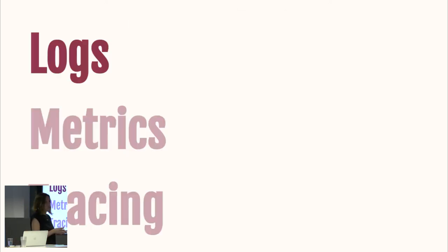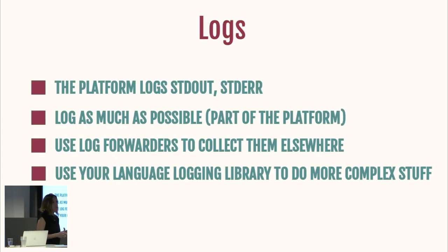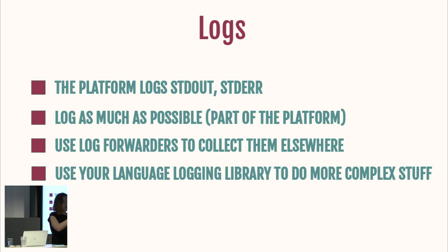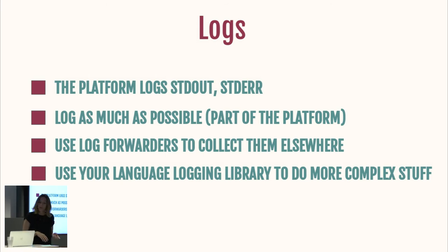Where do we start? If you want to start adding observability to your system, start with logs. Why? Because it's super simple for any cloud to add logging to serverless — it's completely transparent. The platform will log anything you print to standard out or standard error by default. So log as much as possible. Any information that might be helpful in the future, start creating those logs. The good thing is you don't have to use your platform's log indexing system — you can use log forwarders, which are basically Lambda functions that check for new logs in your cloud logging system and send them elsewhere to whatever log platform you're using.